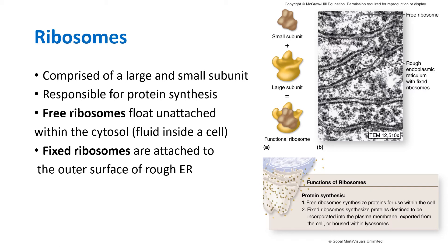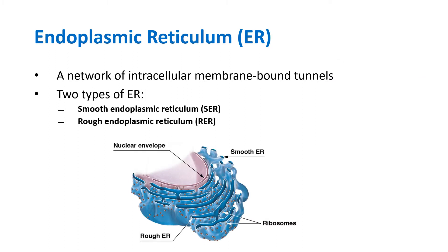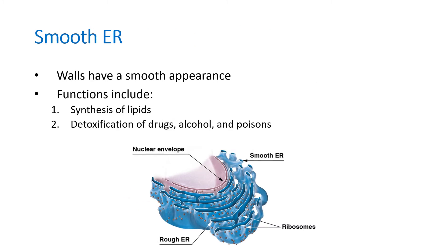In prokaryotes, ribosomes are usually found in the cytosol. The endoplasmic reticulum, found in eukaryotic organisms, looks like a bunch of tunnels. There are two groups: the smooth endoplasmic reticulum and the rough endoplasmic reticulum. The smooth ER looks smooth because its outer surface does not have bumps, while the rough ER has ribosomes on its surface — depicted as bumps — which is why it appears rough.